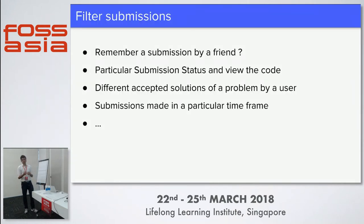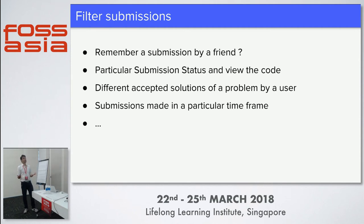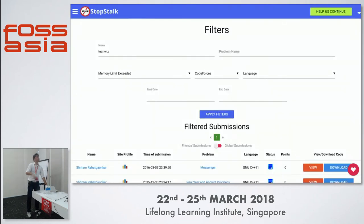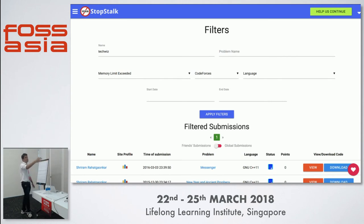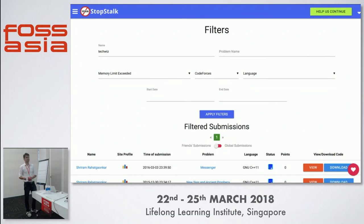Then there is a filter page. Filter is basically - say I remember a friend's submission on some site that gave him a memory limit exceeded. I'll just search for it: the name, a friend's handle, select the site and the problem name, and get all the submissions there. You can see what code gave him memory limit exceeded and then search for that problem to see what fixed the memory limit exceeded problem.